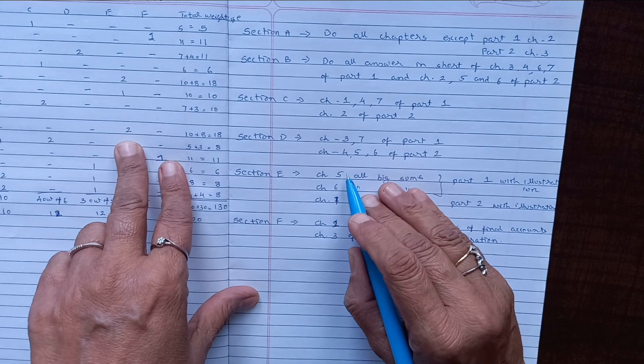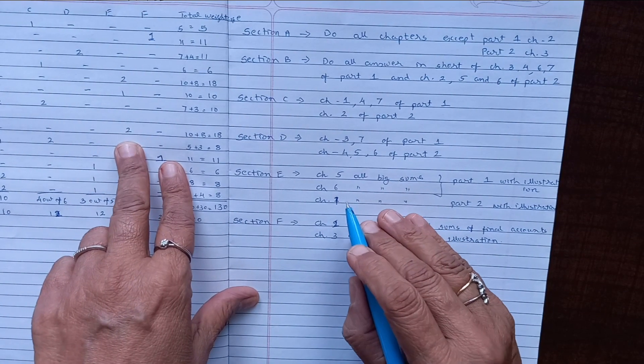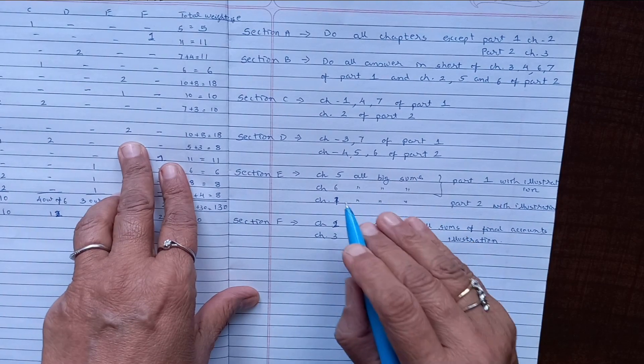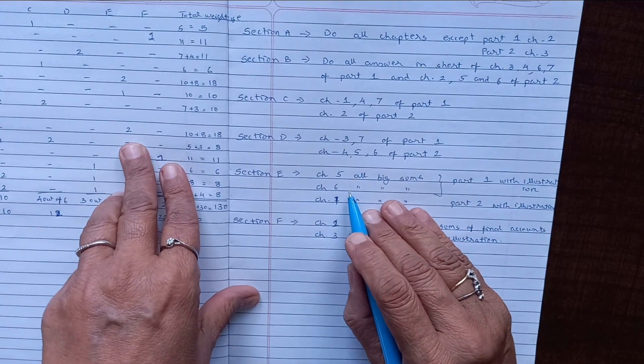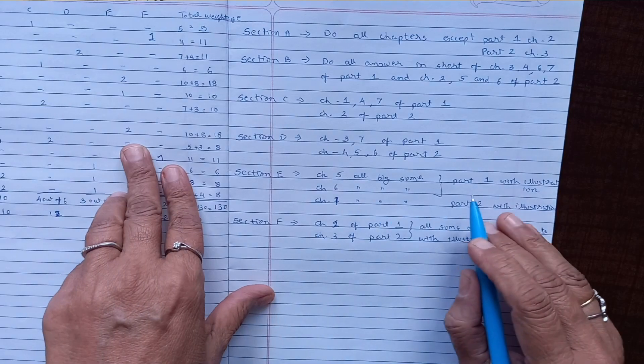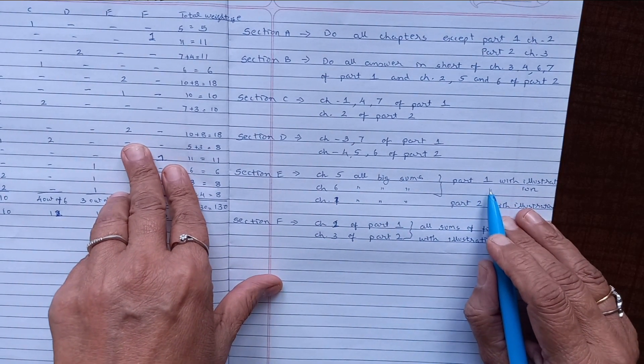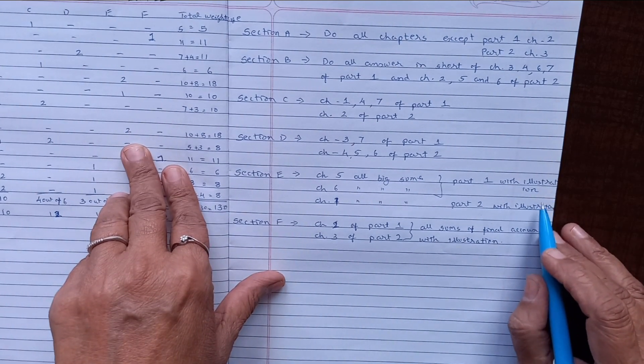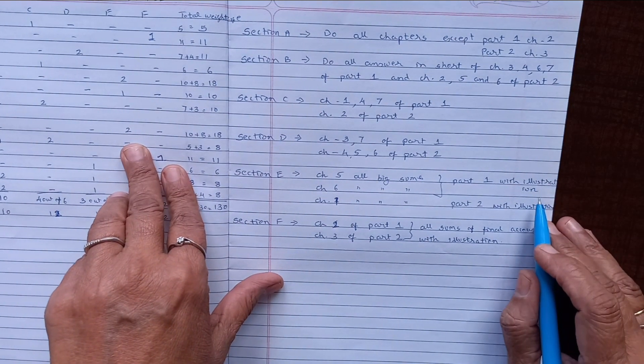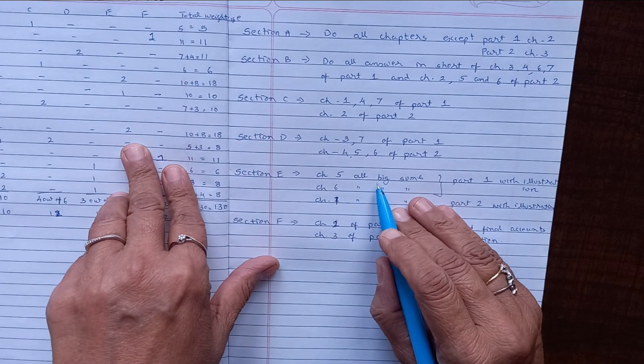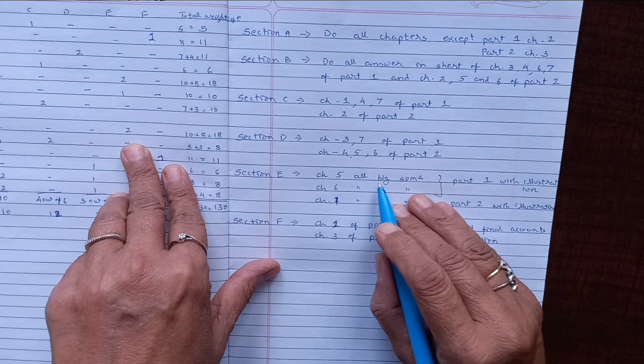These are the three chapters from which, according to the weightage, the possibilities of only these chapters remain for eight mark questions. So you have to do all the questions of exercise, long questions, along with the illustrations. No bargaining. For example, admission: if you are doing all goodwill points related with the admission, retirement also the goodwill point.